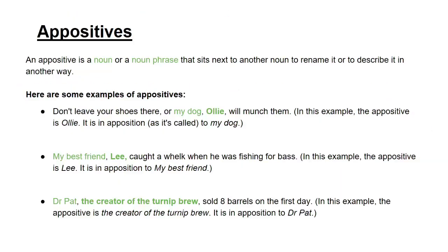An appositive is a noun or noun phrase that sits next to another noun to rename it or describe it in another way. For example: 'Don't leave your shoes there or my dog Ollie will munch them' — the appositive here is Ollie, positioned next to 'my dog.' Another example: 'My best friend Lee caught a walleye when he was fishing for bass' — the appositive is Lee.